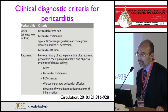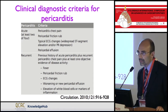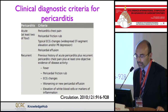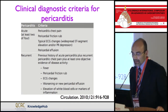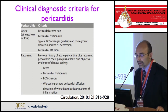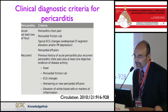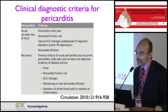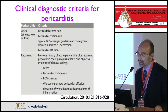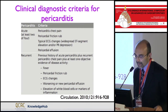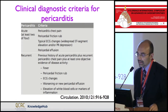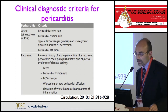For recurrences, we need a previous history of acute pericarditis plus recurrent pericardial chest pain. We also need some objective evidence of disease activity because recurrences are generally milder. Objective evidence includes: fever, pericardial friction rub, electrocardiographic changes — more subtle ST or T-wave changes — worsening or new pericardial effusion, and elevation of white blood cell markers of inflammation.